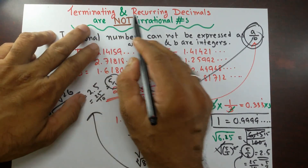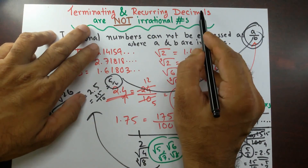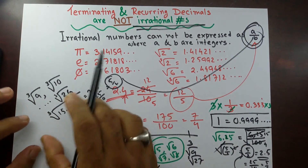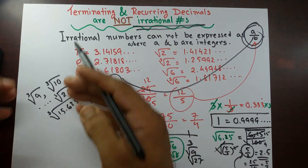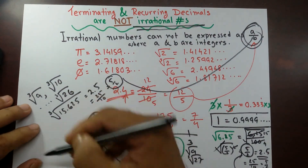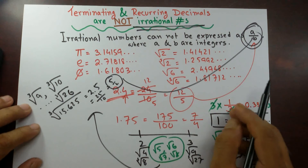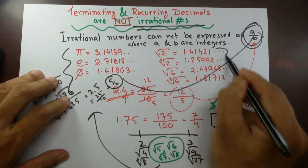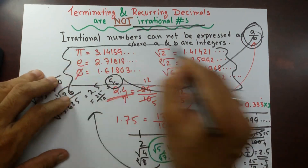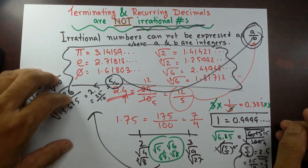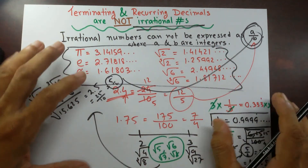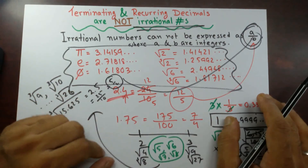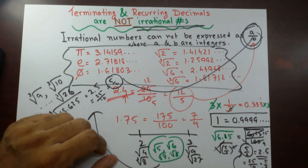So you can see that terminating and recurring decimals are not irrational numbers. Any number that cannot be taken out of a square root, cube root, or any root remains irrational. These are the very famous irrational numbers. I hope this concept is very clear to you. If not, please watch the video again. Thank you very much. Have a good day!